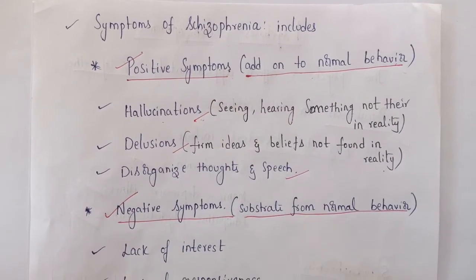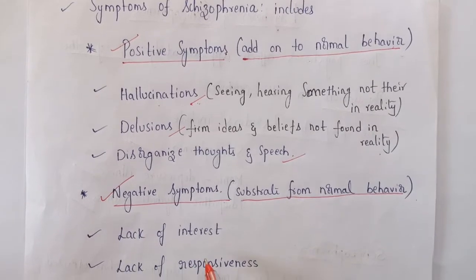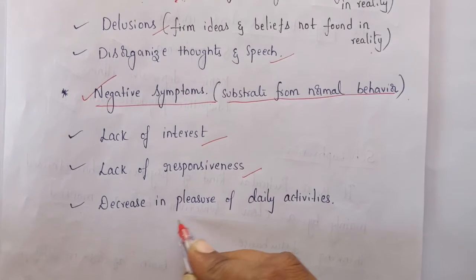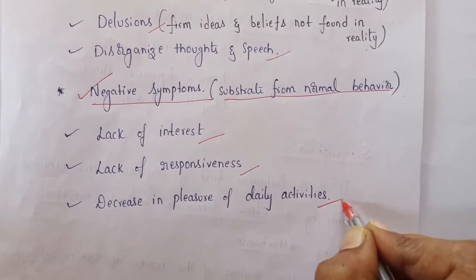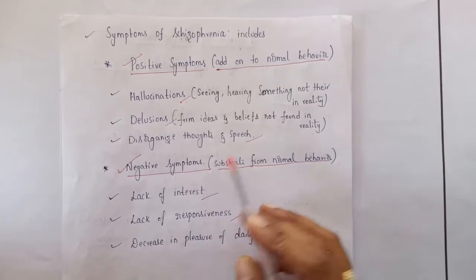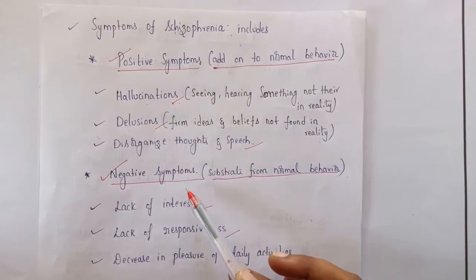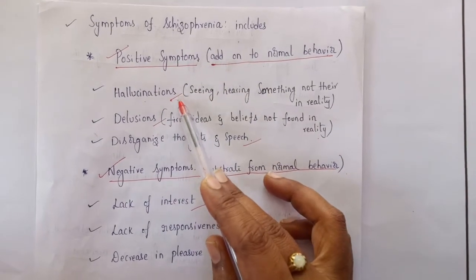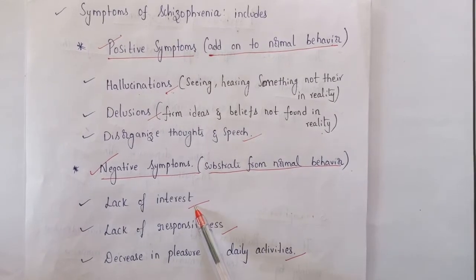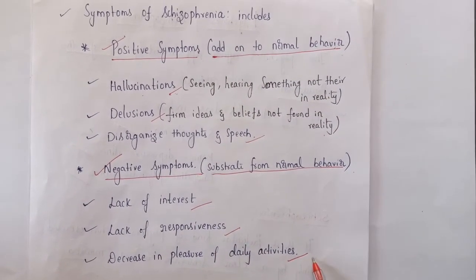Negative symptoms are those subtracted from normal behavior, such as lack of interest in doing any work, lack of responsiveness, and decrease in pleasure from daily activities. In schizophrenia patients, we observe both positive symptoms — hallucinations, delusions, disorganized thoughts and speech — and negative symptoms — lack of interest, lack of responsiveness, and decreased pleasure.